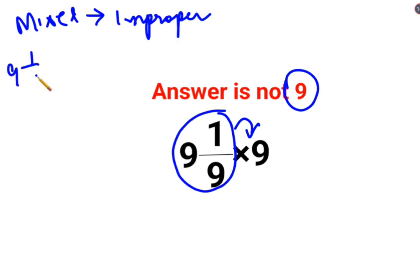So 9 1 by 9, how do you convert it into its improper fraction? The denominator remains the same. Now what happens in the numerator is the denominator and the integer part gets multiplied and the numerator gets added. So the answer is 82 upon 9.